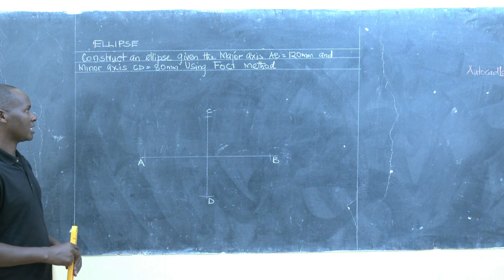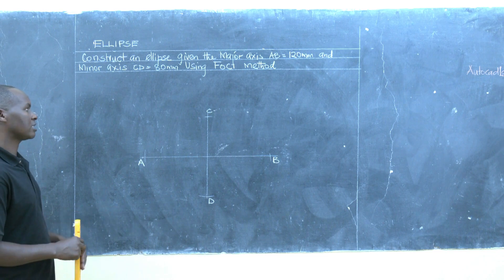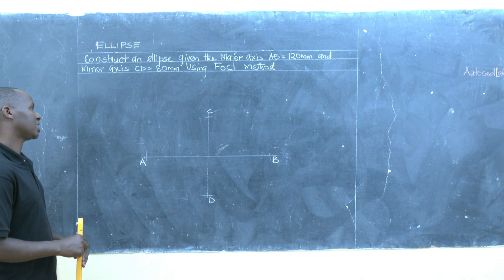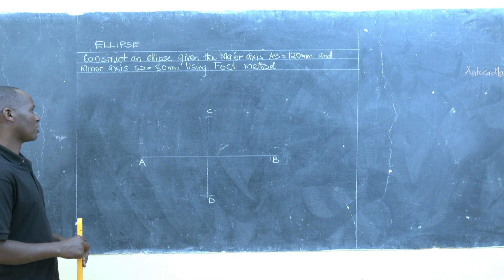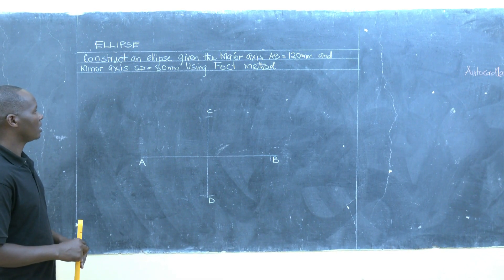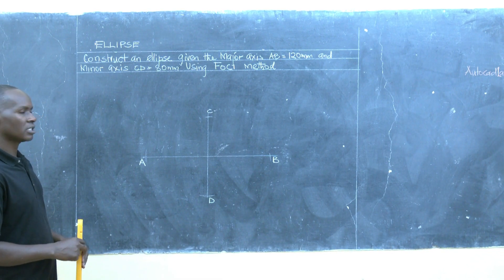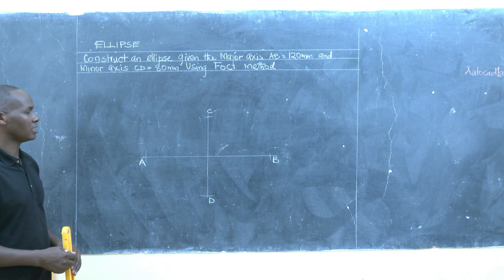The two diameters — the two axes — should intersect at 90 degrees through the center.